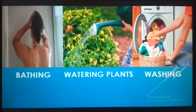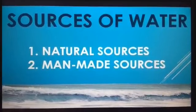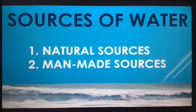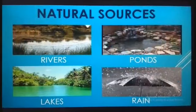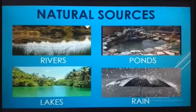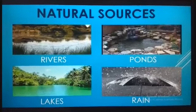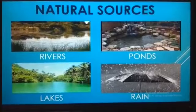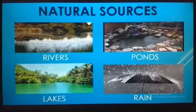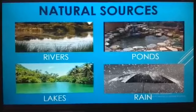Next, we come to the sources of water. We get water from many sources. There are two sources of water, namely natural sources and man-made sources. Natural sources are rivers, ponds, lakes, etc. Where do the rivers, lakes and ponds get their water from? They get water from rainwater. Some rainwater goes through the soil and reaches the ground below and gets collected there. This water is called ground water — the water present below the ground is called ground water.